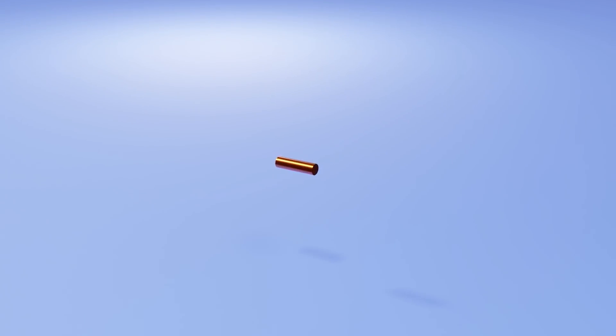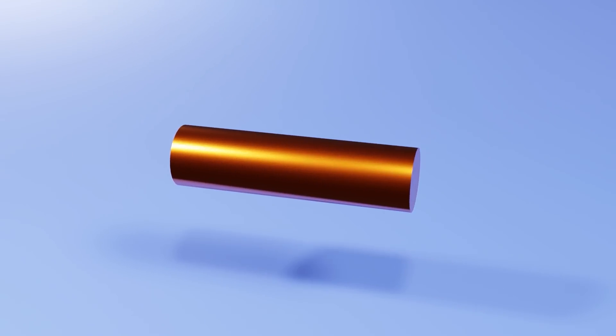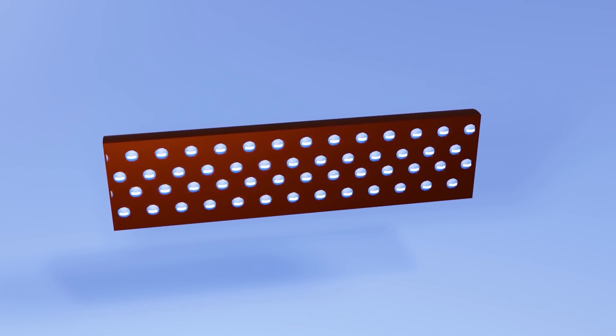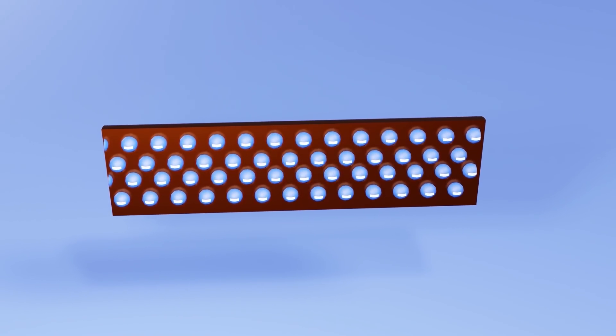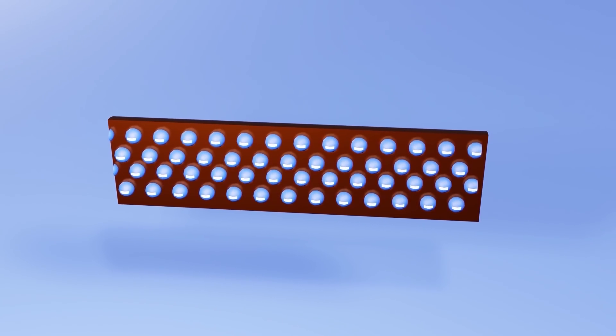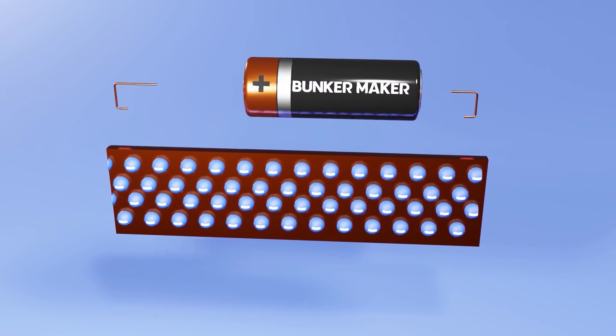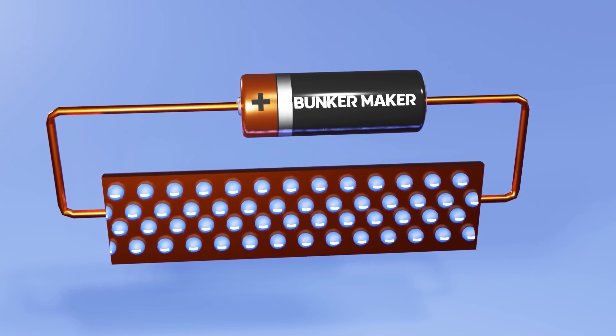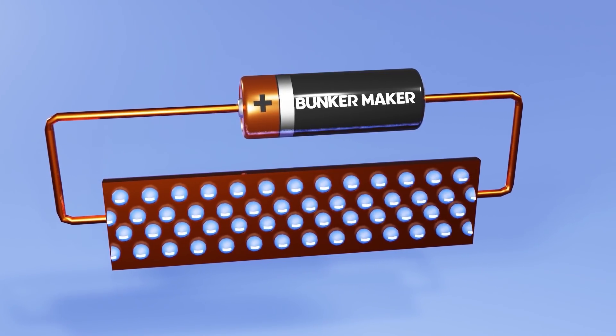First we must clarify the concept of electricity. For this we are going to use this piece of cable. This cable has electrons, which are subatomic particles of negative charge that can move freely. When a potential difference or voltage is applied between the two ends of the cable, the electrons are forced to move. It is to this movement that is known as electric current.